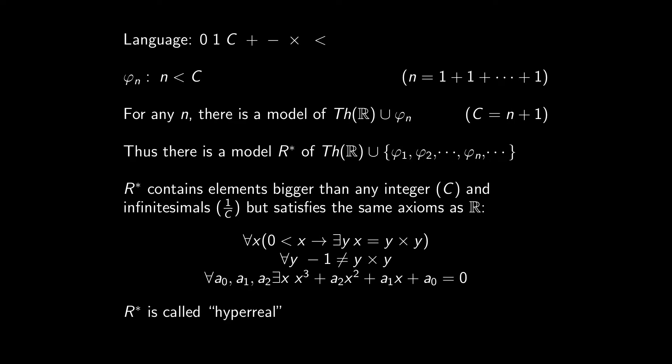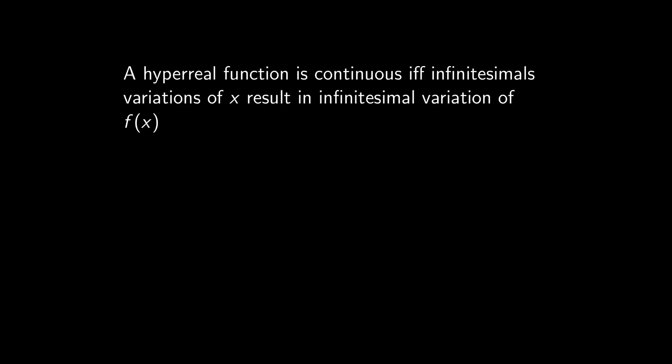Once you have infinitesimals, a lot of things become so easy to state, like continuity. A hyperreal function is continuous, if and only if infinitesimal variation of x results in infinitesimal variations of f of x. How clean is that? There is no epsilon and delta getting arbitrarily small, just take infinitesimals. Much easier, much cleaner, and, may I say, this is how Leibniz himself talked about continuity, with infinitesimals. But model theory had not been invented yet. And Leibniz couldn't make rigorous the idea of infinitesimal variations.